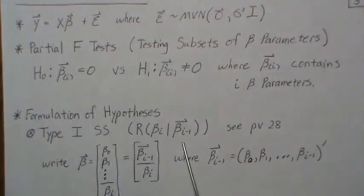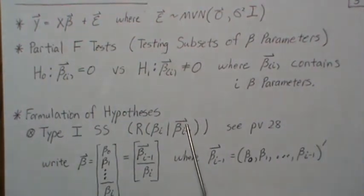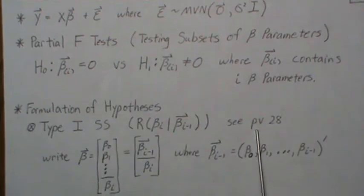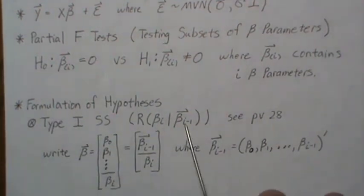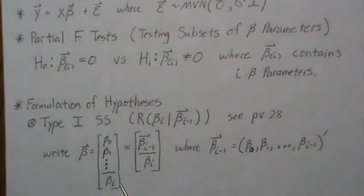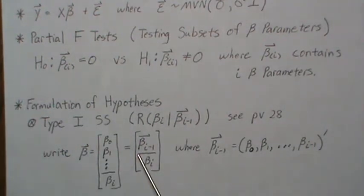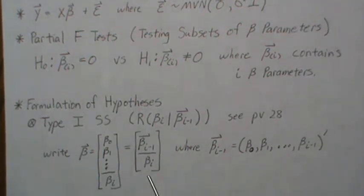The Type 1 sum of squares is represented as R(beta_i | all previous betas). I'd recommend watching the previous video number 28 in the playlist for more details. We write the beta parameter where this is the i-th beta parameter — say the 4th in the list — then beta 3, 2, 1, and 0 are already in the model, and we're adding this one to look at the increase in the sum of squares regression.